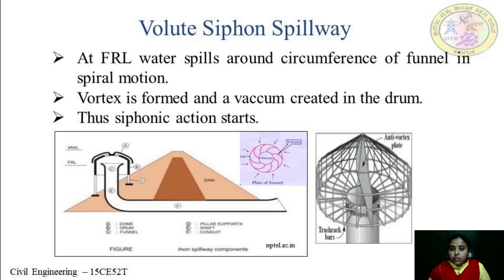As soon as the water enters into the funnel, it undergoes a circular motion, and due to this circular motion the vortex induces a suction pull, creating a vacuum in the pipe, and automatically the siphon action starts taking place. This is how the volute type of siphon spillway works — it is a very unique type of spillway that basically works on an automatic siphonic system.